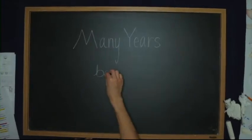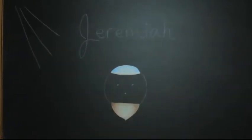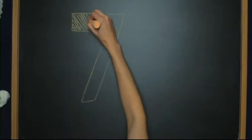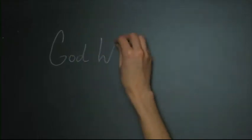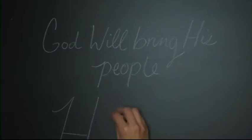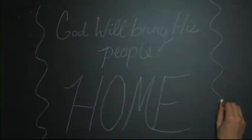Many years before God's people were taken to Babylon, God made a promise. He told the people his promise through the prophet Jeremiah. Jeremiah said that the exile would last 70 years and that God would bring his people back home. This was God's promise, and God always keeps his promises.